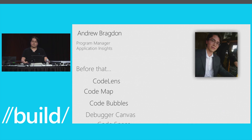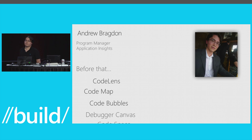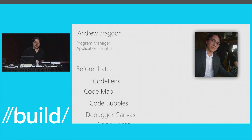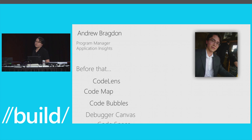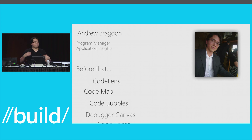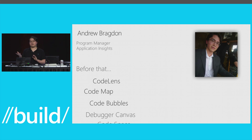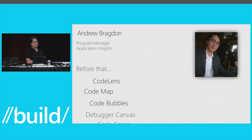Just to tell you a little bit about myself: I'm a program manager on the Application Insights team. I did a lot of work on the Application Insights tools for Visual Studio, and before that I owned developer visualization for Visual Studio. I worked on features like Code Lens, which showed contextual information above each method and class in the Visual Studio Editor — that shipped in Visual Studio Ultimate — and Code Map as well.